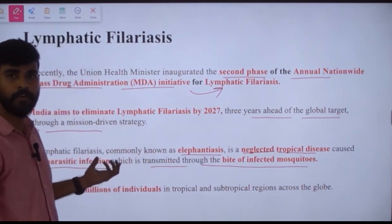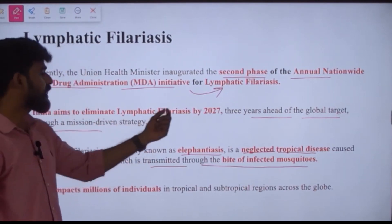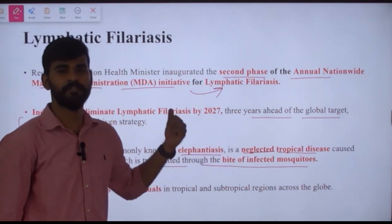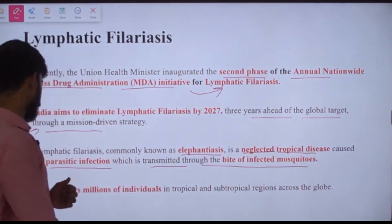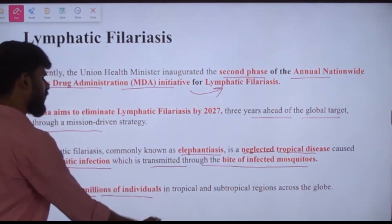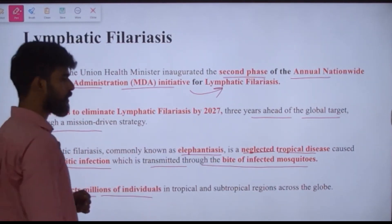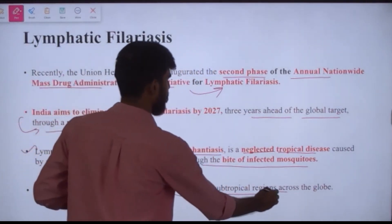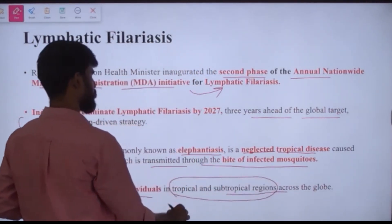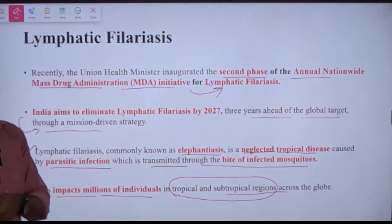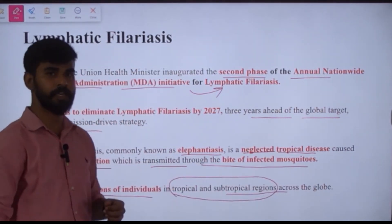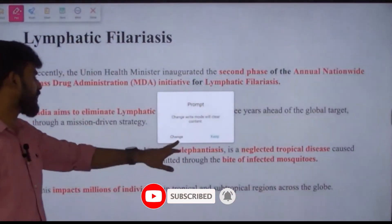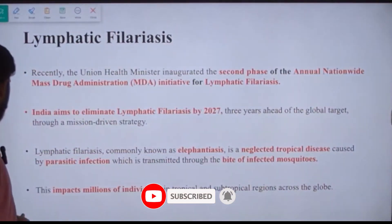When a mosquito infected by this parasite bites a human being, the person gets infected with lymphatic filariasis. This disease impacts millions of individuals in tropical and subtropical regions. This is an important point, as a question based on this may be asked in prelims examinations.